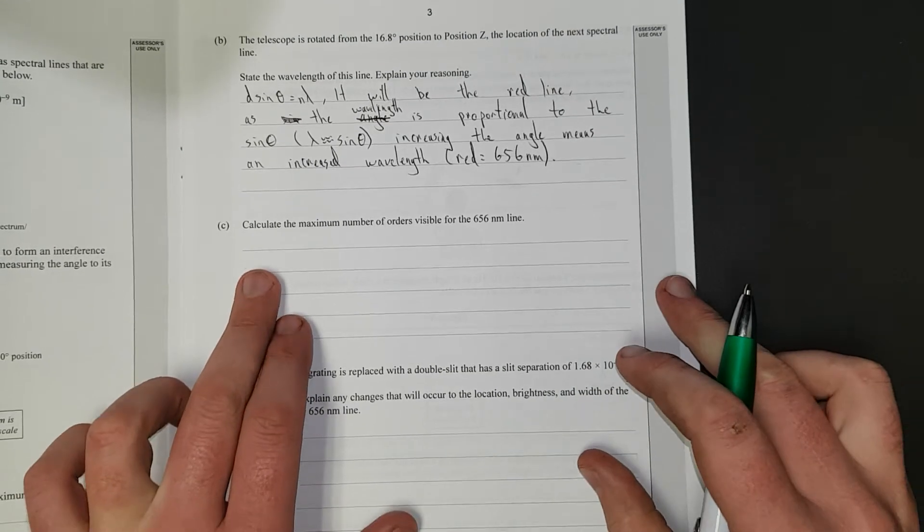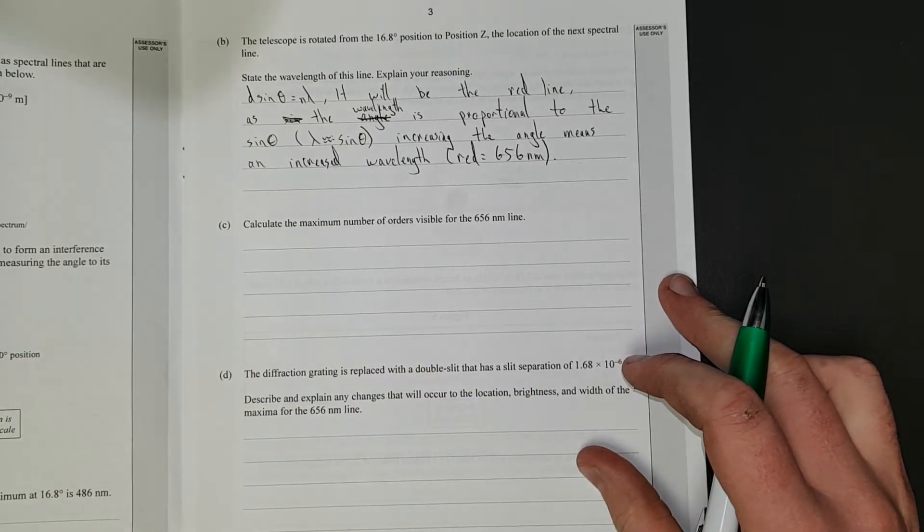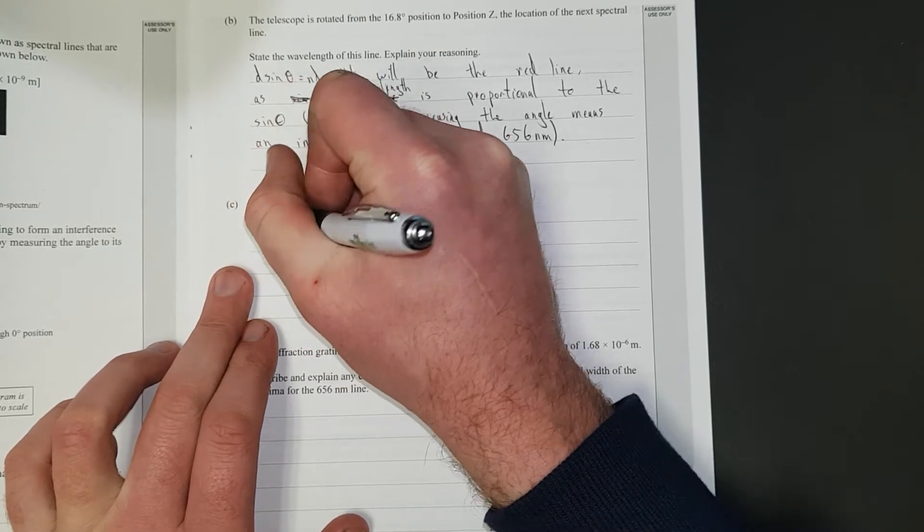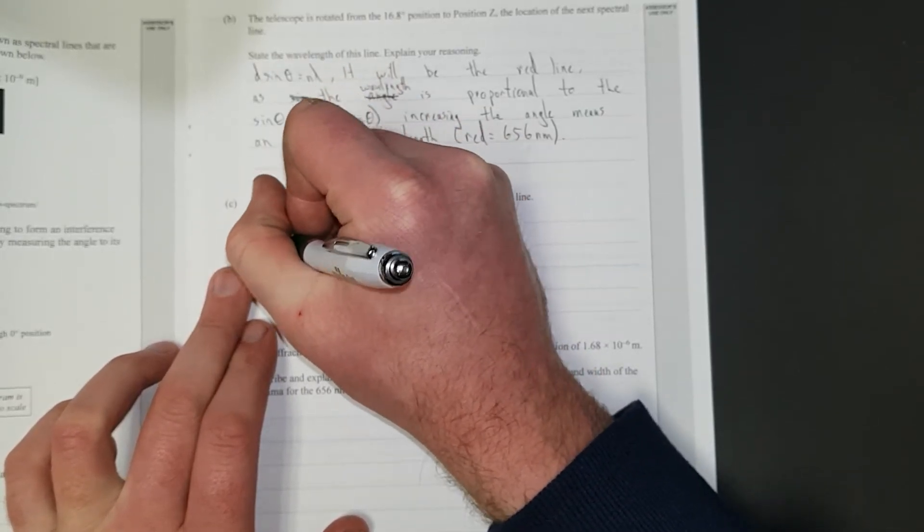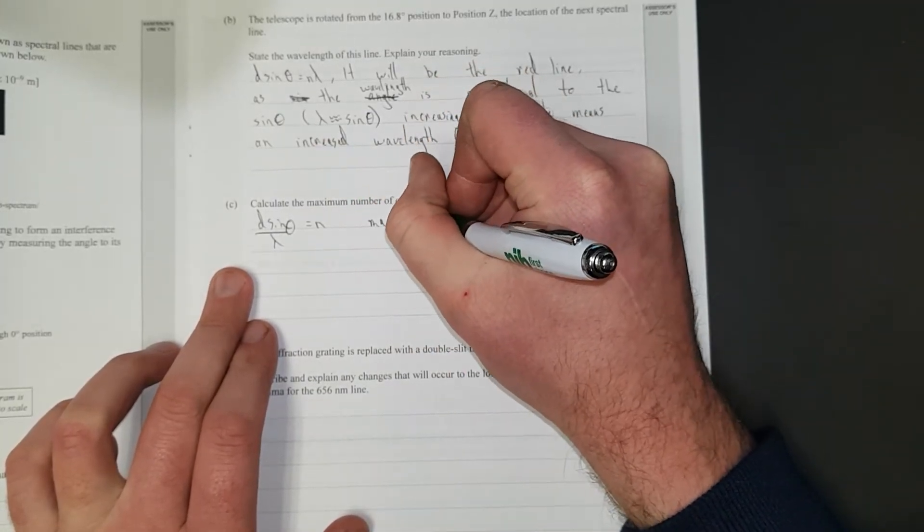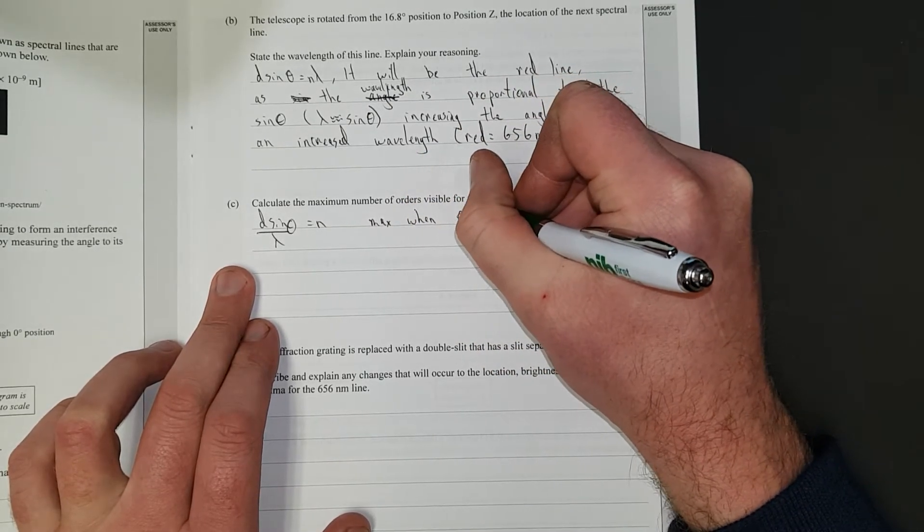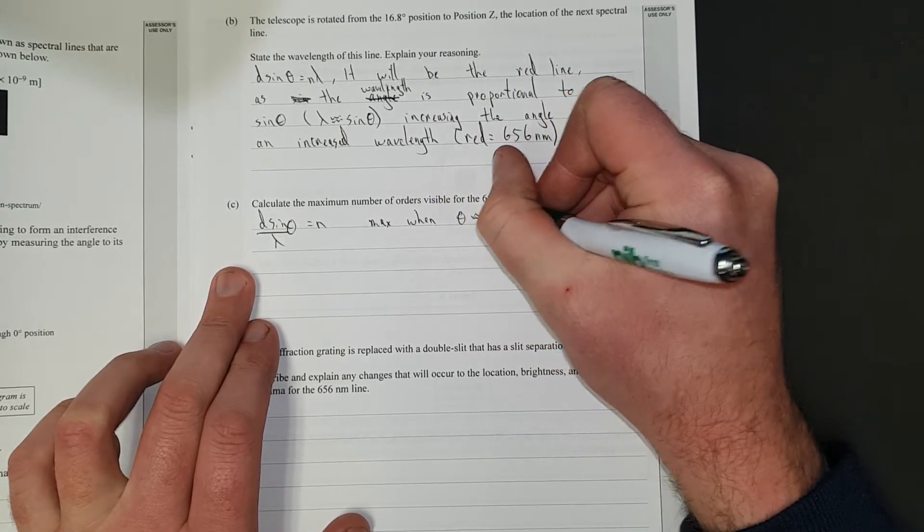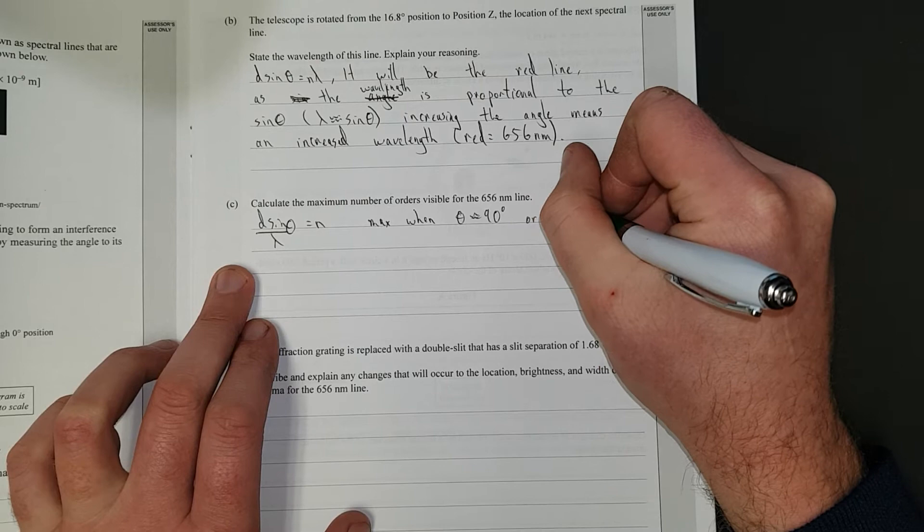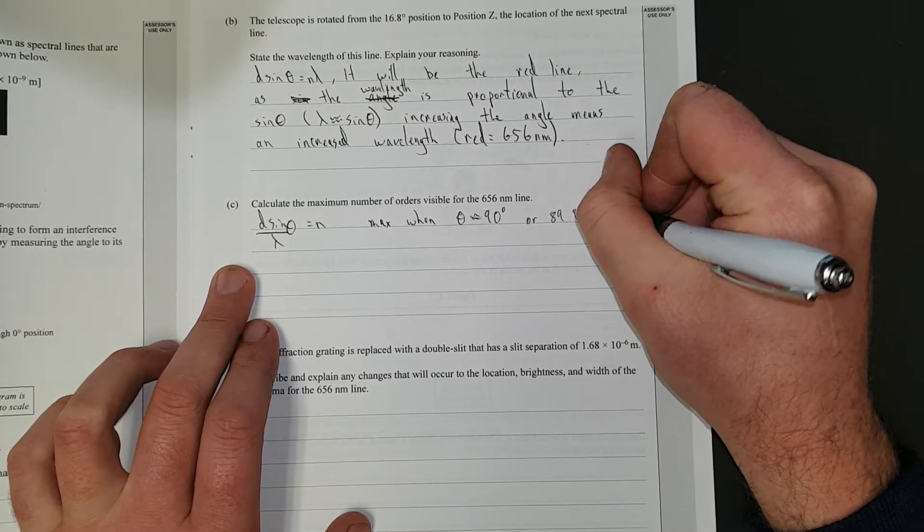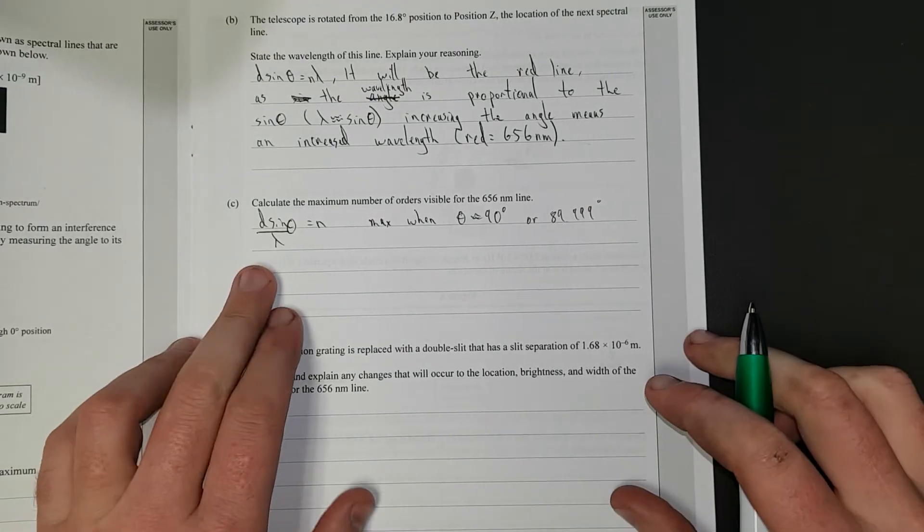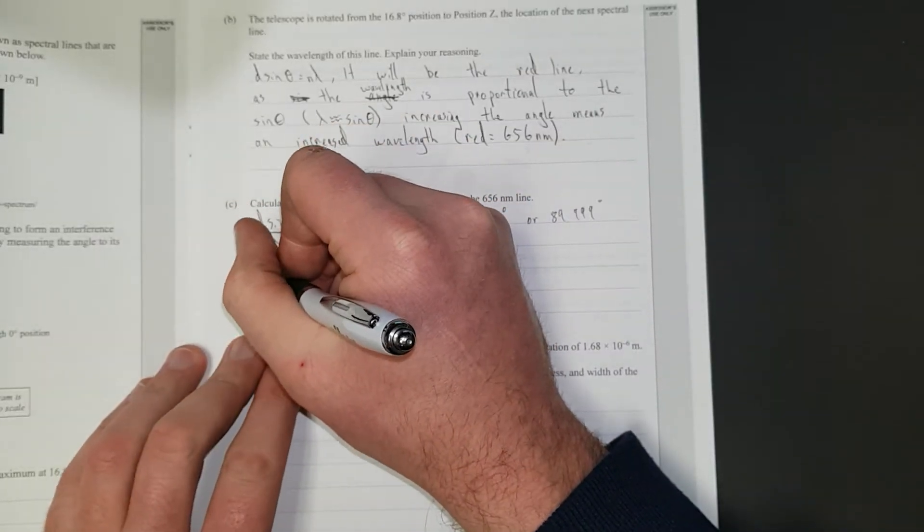Calculate the maximum number of orders visible for the 656 nanometer line. Again, we have our favorite formula, d sine theta over lambda equals n. And then max is when theta is proportional to 90 degrees. It's like 89.99999. I'll just put 89.0.999 degrees. You get them adrift. You can't really have 90 degrees, because that's like an impossible number. But anyway, substituting it in, you get...